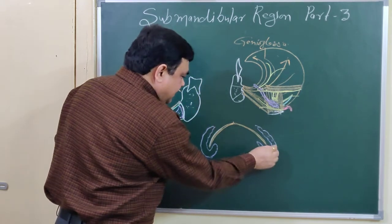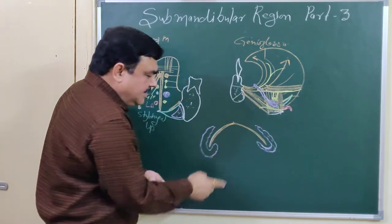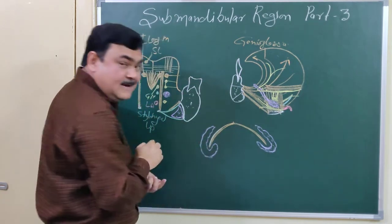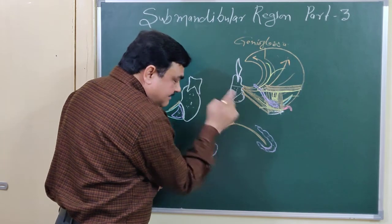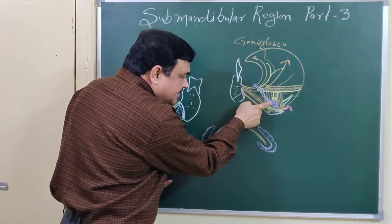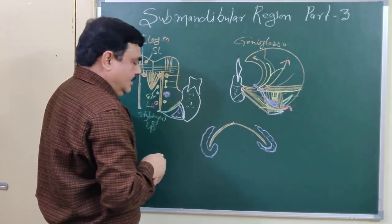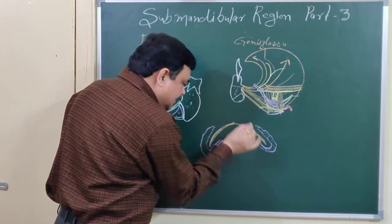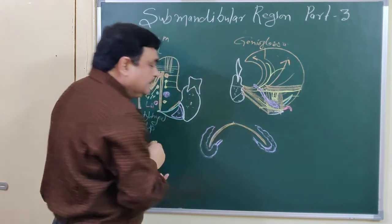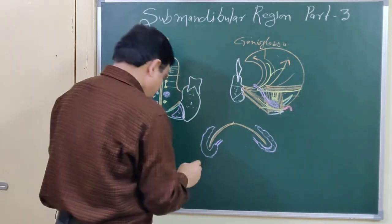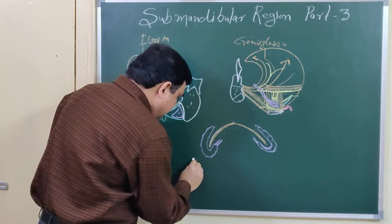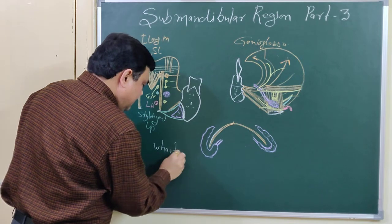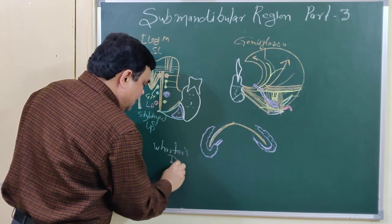The gland is J-shaped and is indented by the posterior margin of the mylohyoid muscle. This divides the gland into a superficial and deep part. From the deep part, the duct arises — this duct is known as Wharton's duct.